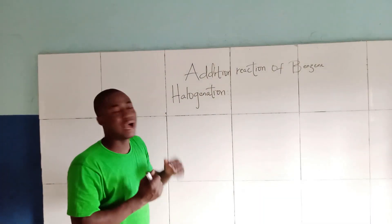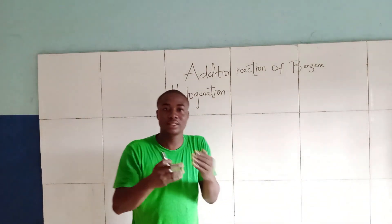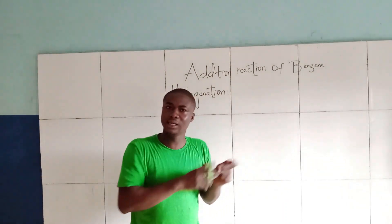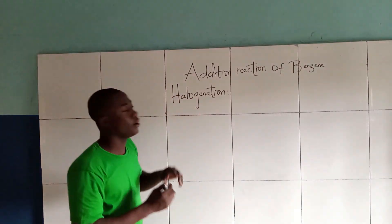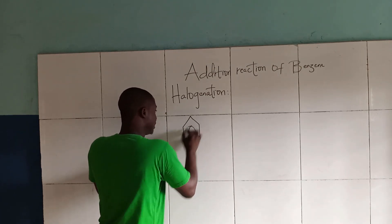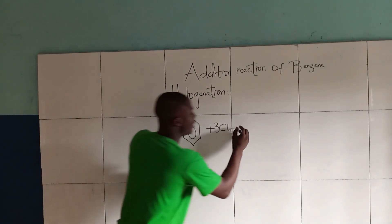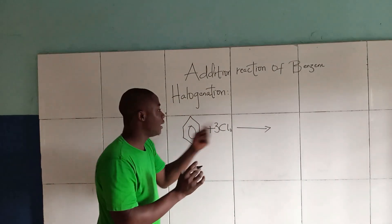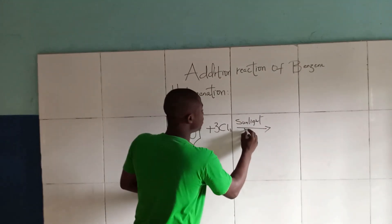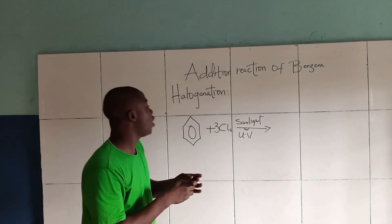Let's talk about the Halogenation reaction of Benzene. Recall, during addition reaction of Benzene it requires an addendum, and that addendum should be three moles. This is Benzene reacting with a halogen like Chlorine — it should be three moles. The catalyst used here is Sunlight, working in the presence of UV or ultraviolet rays. What would be our product?